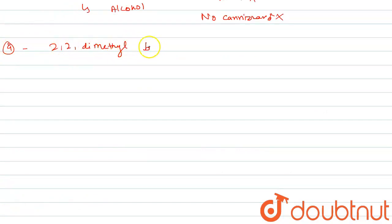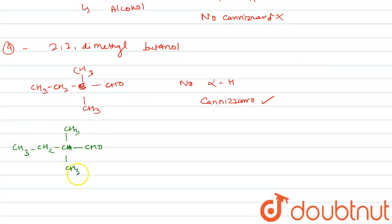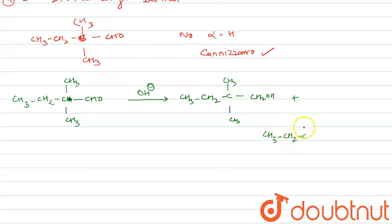Ninth one is 2,2-dimethyl butanal. In this there is no alpha hydrogen, so Cannizzaro reaction takes place. CH3, CH2, CH3, CH2. This CHO group in one product oxidizes, and another one reduces to CH2OH alcohol group, plus sodium formate. That's it. Thank you.